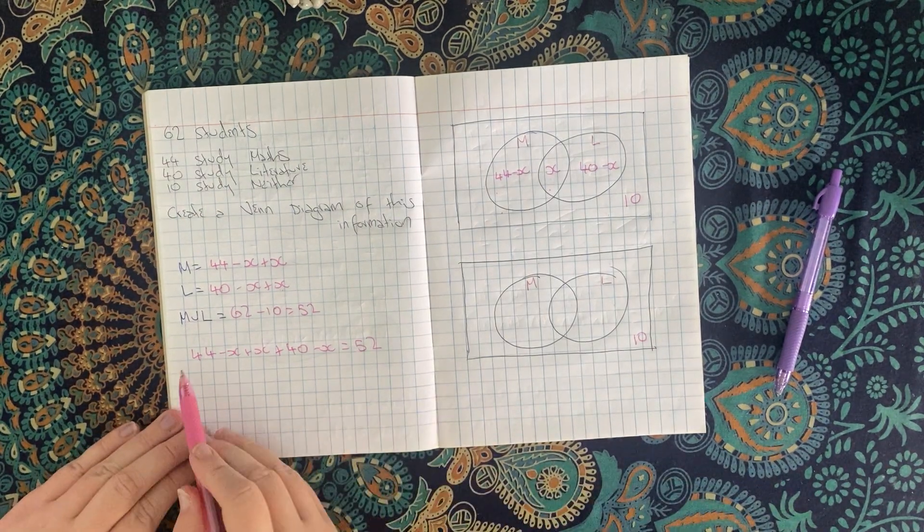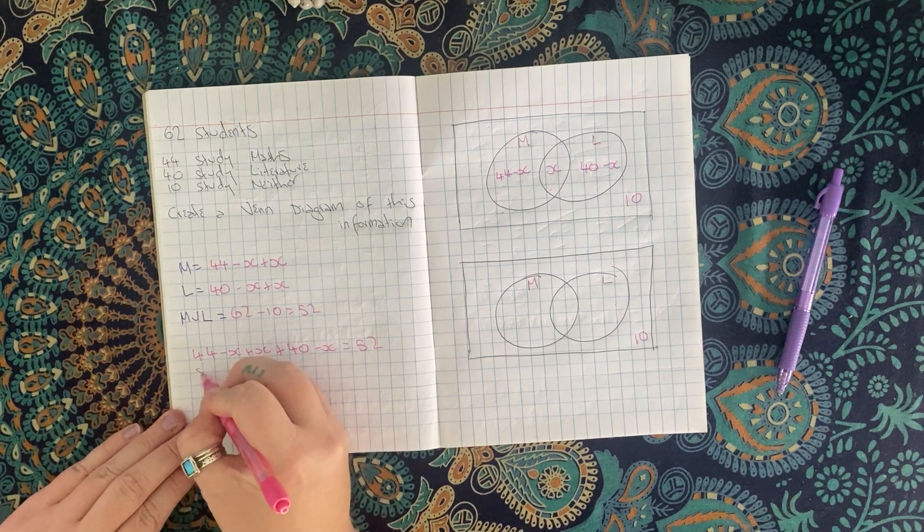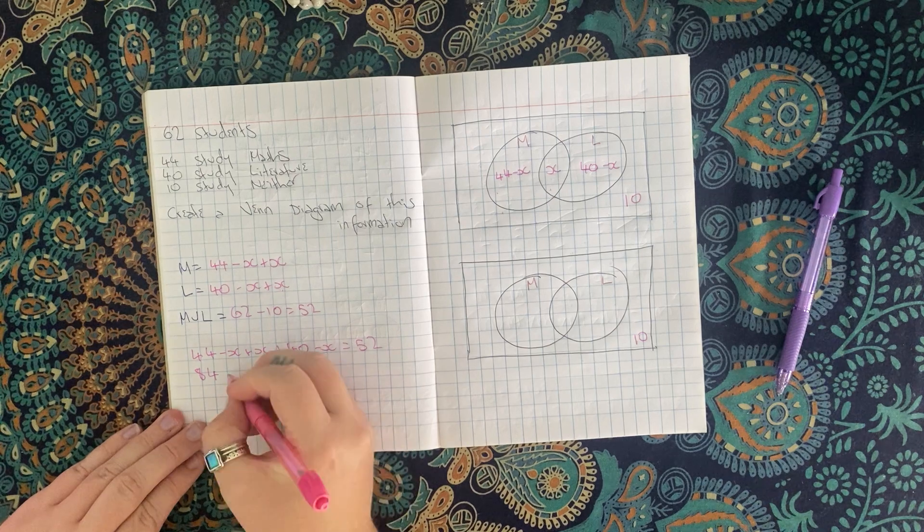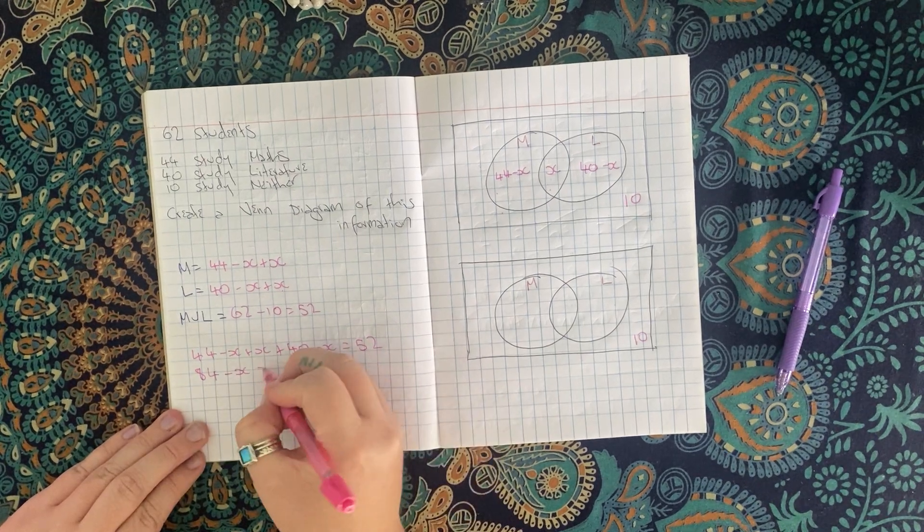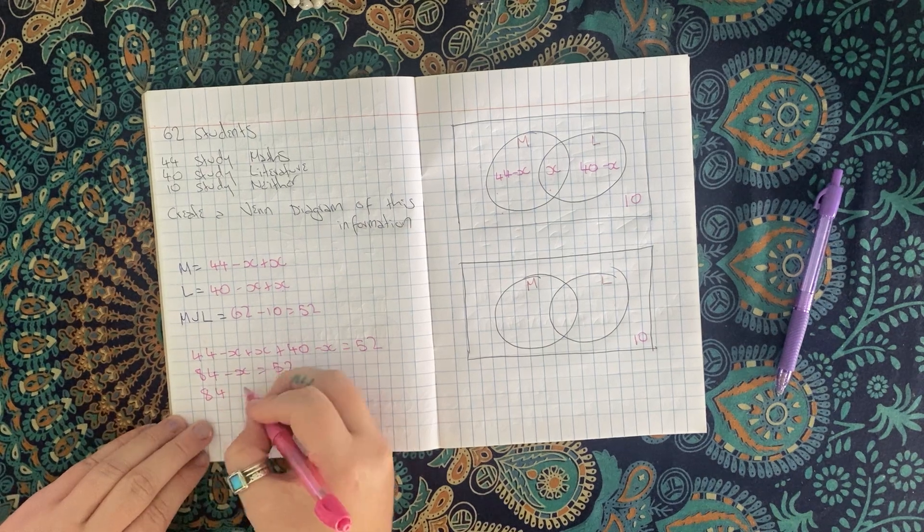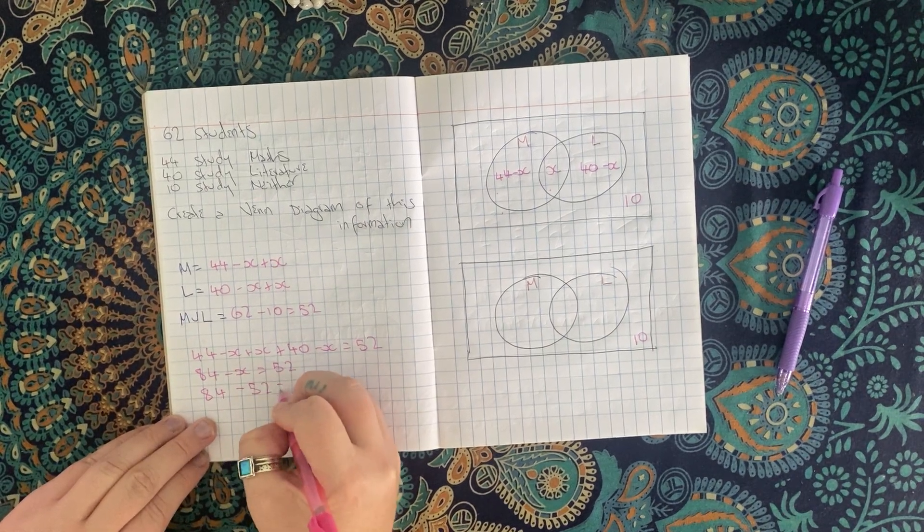So I'm just going to add together all the bits that match. 44 plus 40 is 84, and then I have minus X plus X, so that's nothing. So then I just have minus X, which means 84 minus X equals 52.